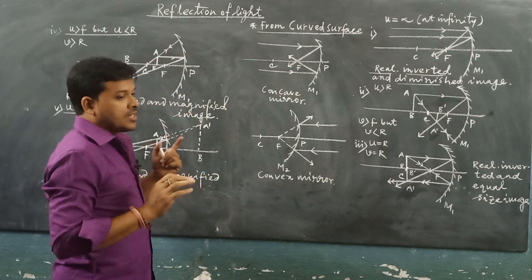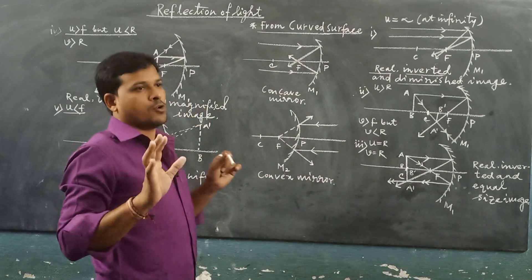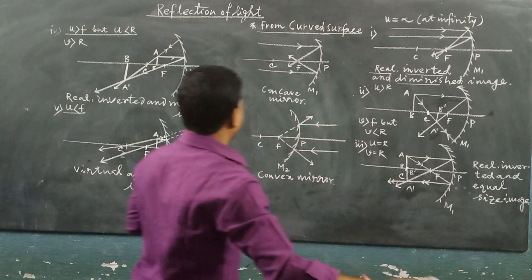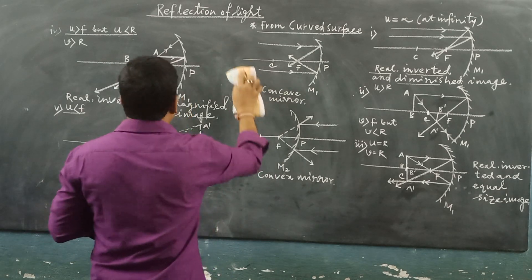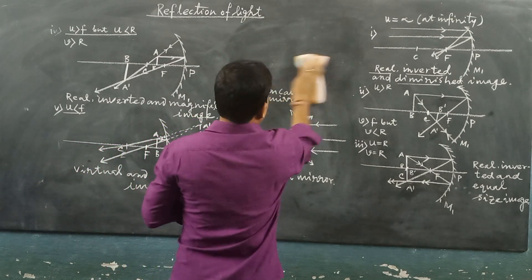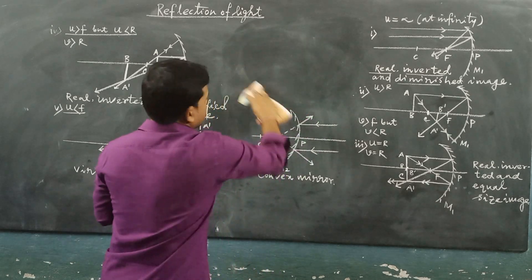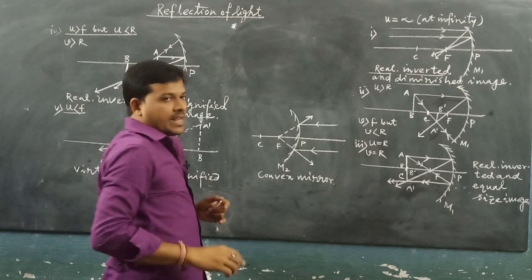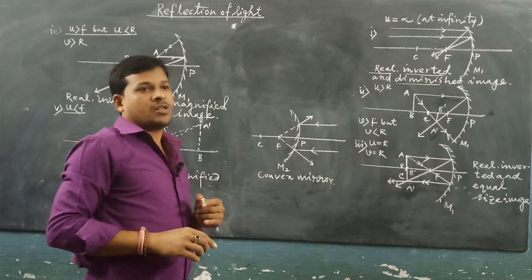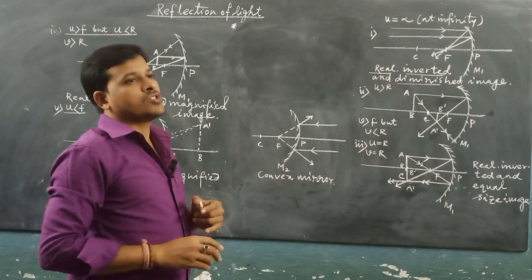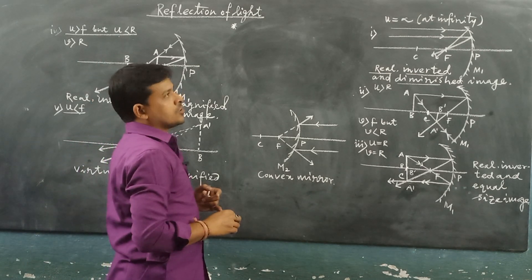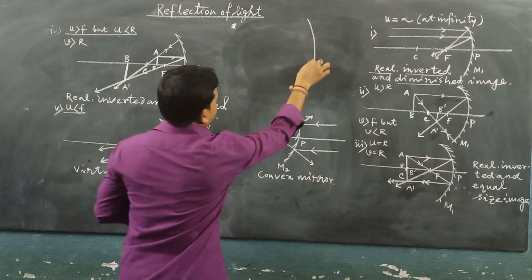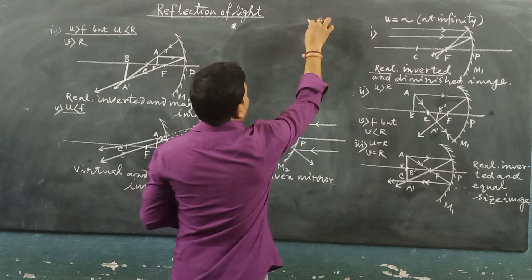Similarly, in the case of a convex mirror, a convex mirror always forms a virtual and diminished image — just a single ray diagram covers all cases. For all cases, the virtual and diminished image will be formed. That is why the convex mirror is used as a rear-view mirror or looking-glass mirror in bikes, four-wheelers, and cars.